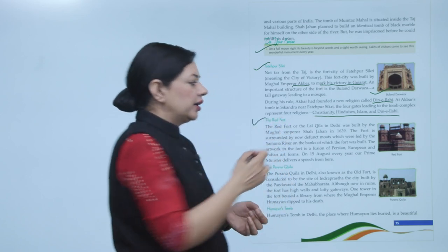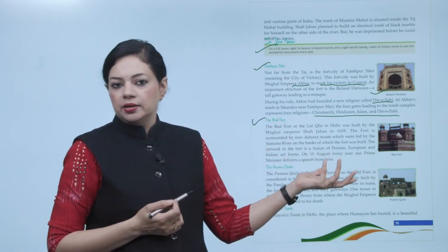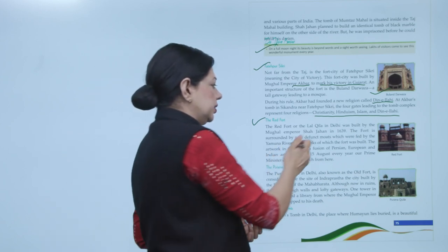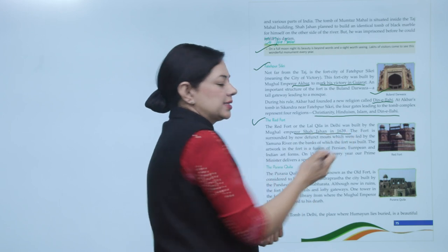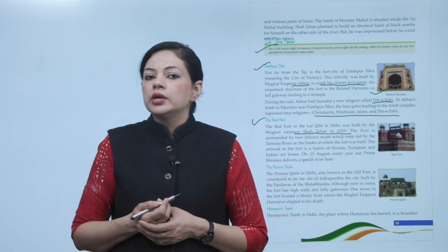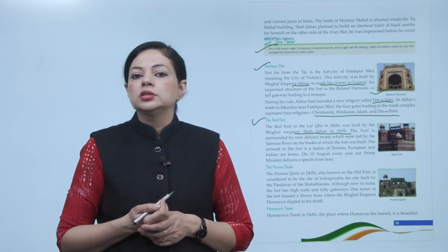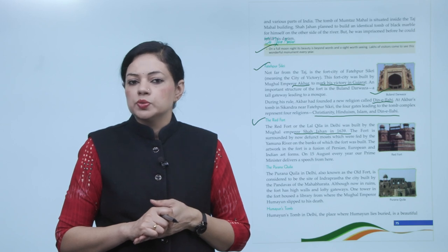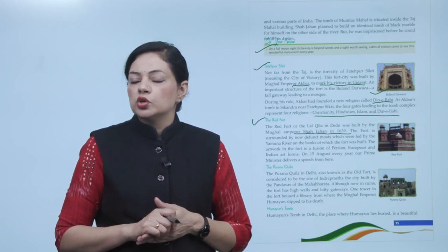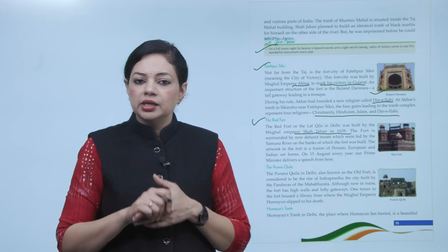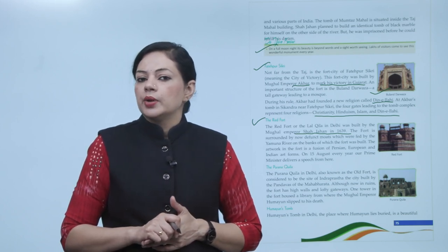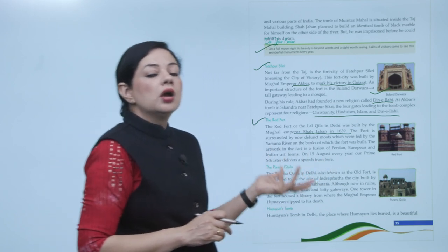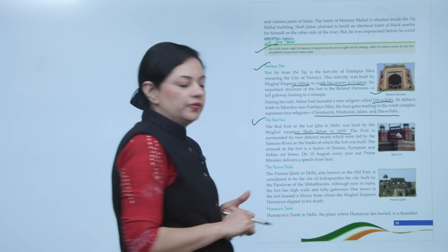Next building is Red Fort — Lal Qila in Delhi — built by the Mughal Emperor Shah Jahan in 1639. This fort is surrounded by now defunct moats which were fed by the Yamuna river on the banks of which the fort was built. The artwork in the fort is a fusion of Persian, European and Indian art forms. On 15 August every year, our Prime Minister delivers a speech from here — 15 August ko hamare Prime Minister Red Fort se hi speech deliver karte hain.